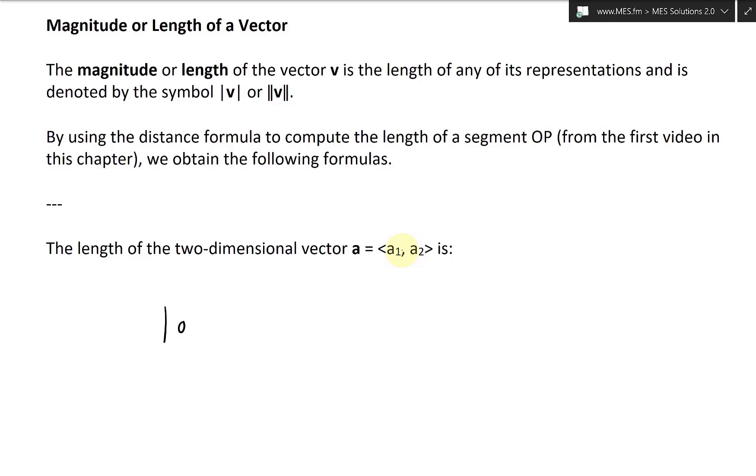and this is just using the Pythagorean law. So we'll have the absolute value of vector a equals square root of a1 squared plus a2 squared. So you just square the components, add them up, and then square root the whole thing. That is in two dimensions.